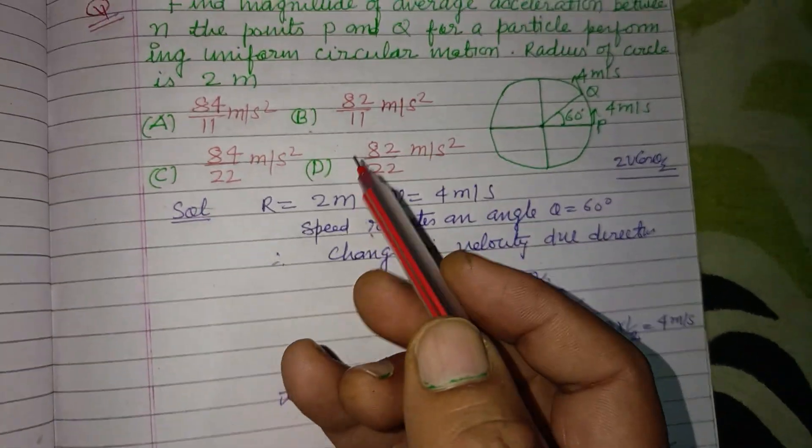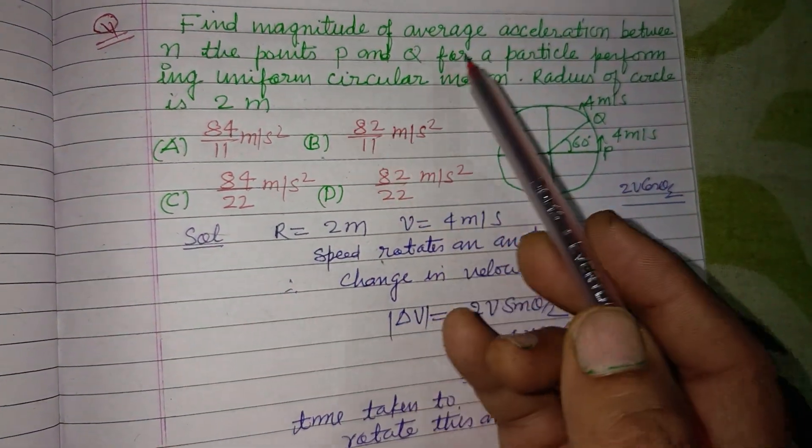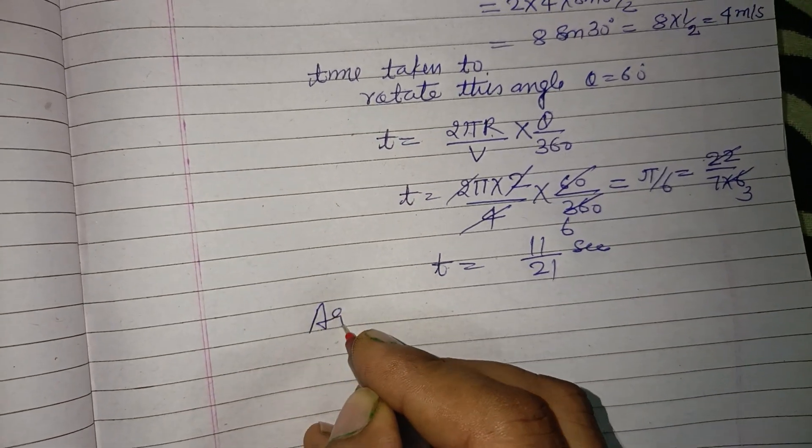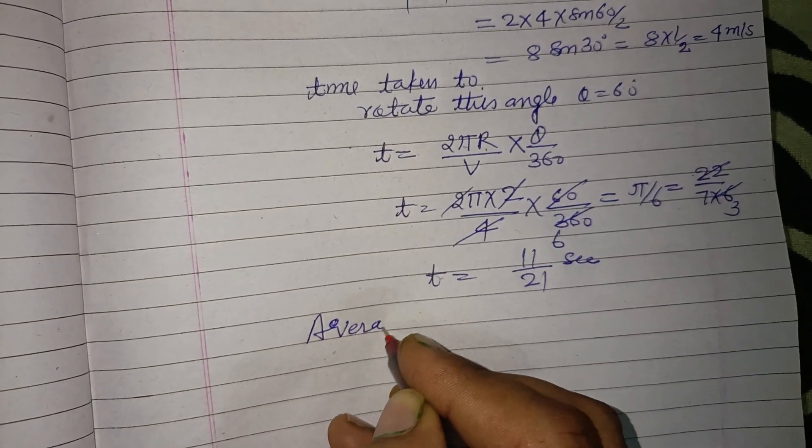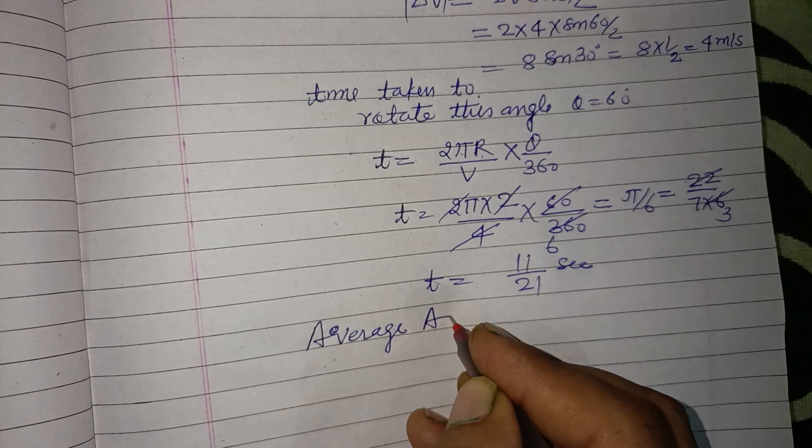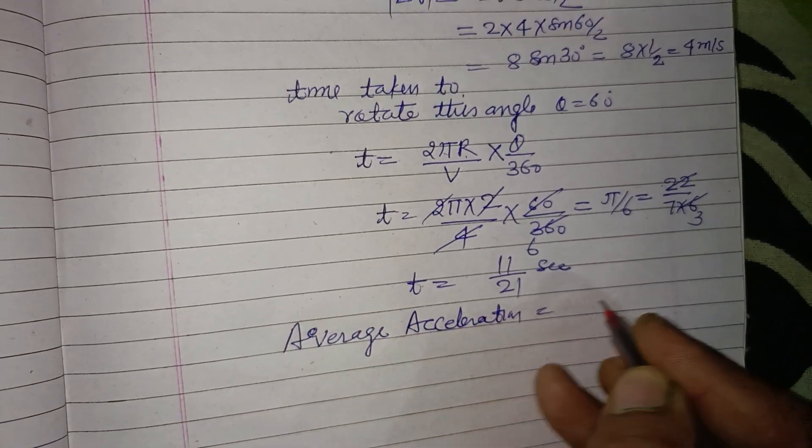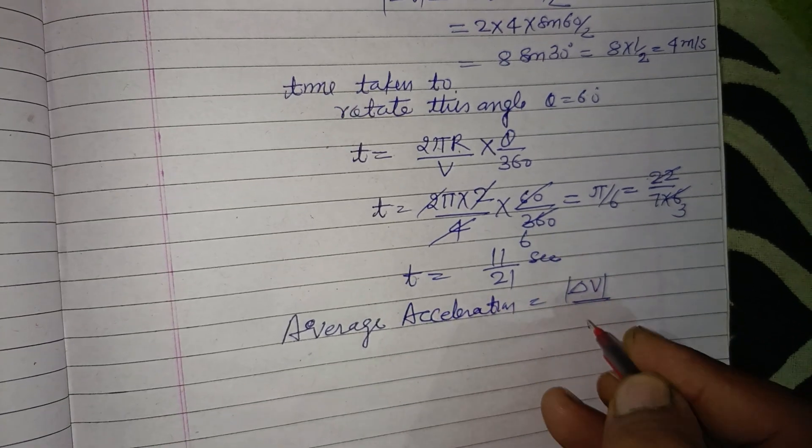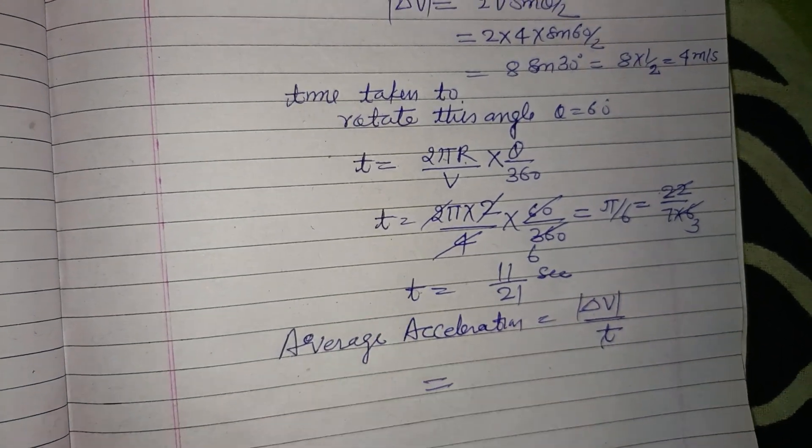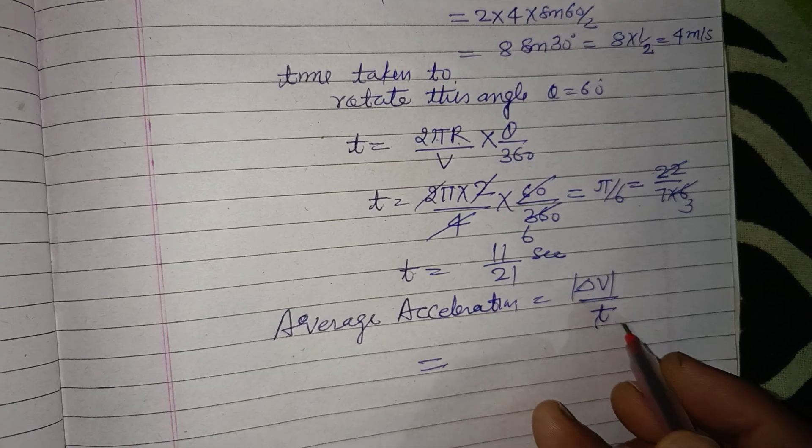Therefore question is asking average acceleration. So this is del v over T. Change in velocity upon time.